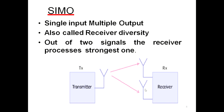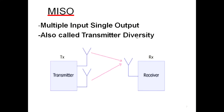Since we replicate the signal by having multiple antennas at the receiver, it is also called receiver diversity. In the previous slide, multiple antennas were at the transmitter, which is why it was called transmitter diversity.